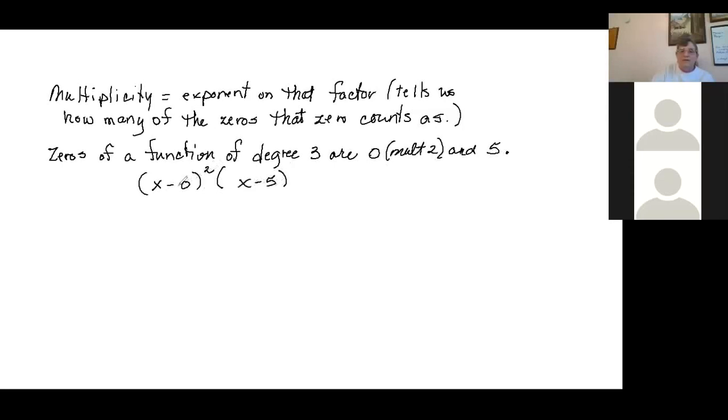Well, x minus zero is just x, so this is x squared times x minus five, which is just x cubed minus five x squared. So that's the function we're looking for.